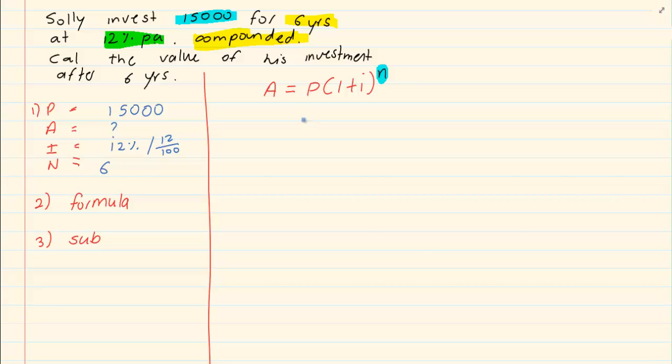Now substitute what we have. Then press it into your calculator. You are going to press 15,000, open brackets, 1 plus the fraction 12 over 100, close brackets, and then you are going to use the power button. It is X and then it has a little square on it, to the power of 6.